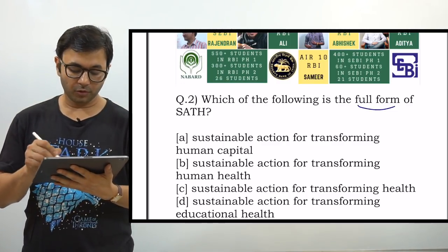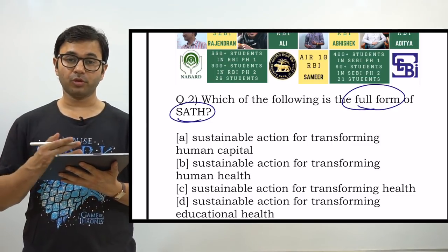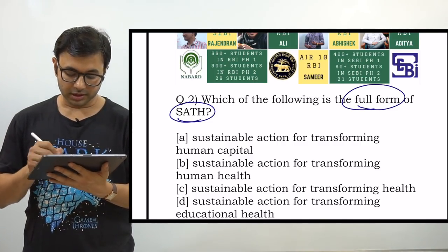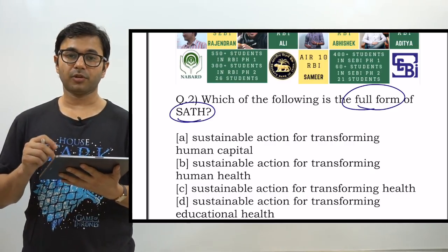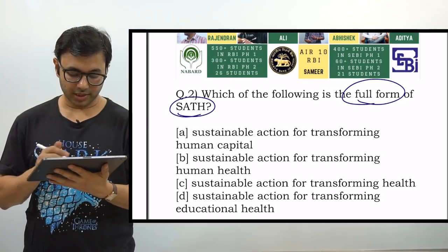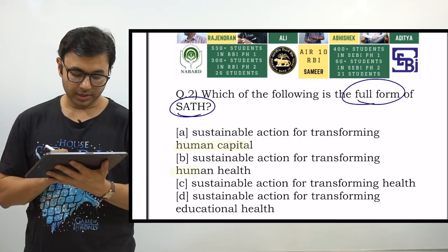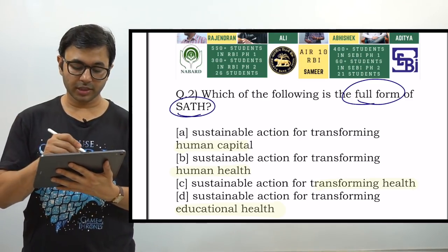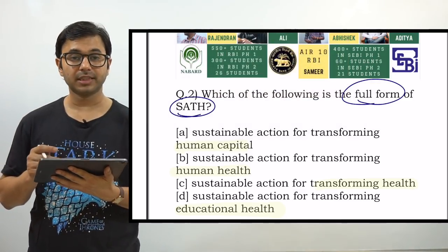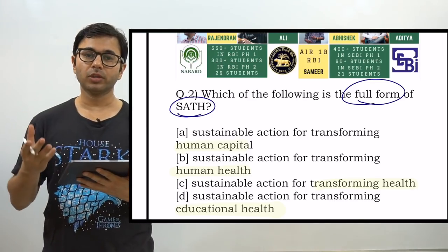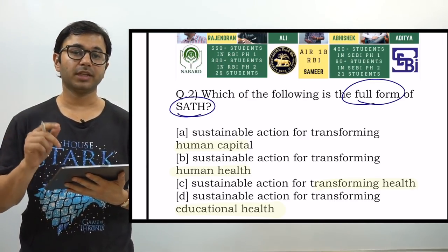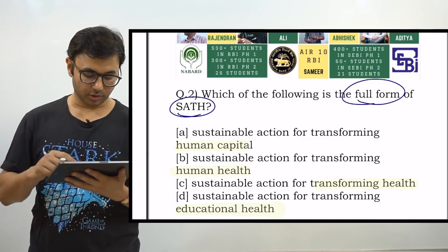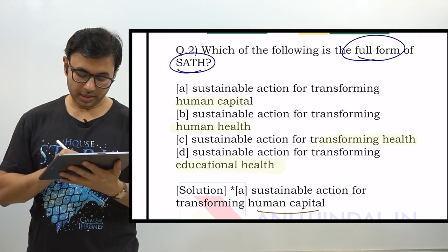The second question: Which of the following is the full form of SAT? A favourite question of both NABARD and RBI. The options are: A) Sustainable Action for Transforming Human Capital; B) Sustainable Action for Transforming Human Health; C) Sustainable Action for Transforming Health; D) Sustainable Action for Transforming Educational Health. If you know the answer, type it in the comment section — it boosts your confidence and helps you verify whether what you know is right or wrong. The answer is A — Sustainable Action for Transforming Human Capital.